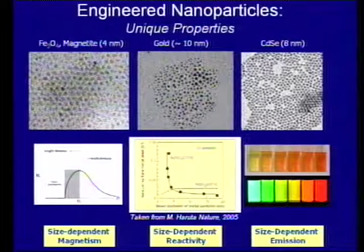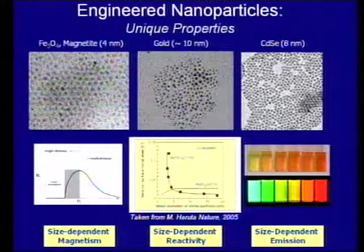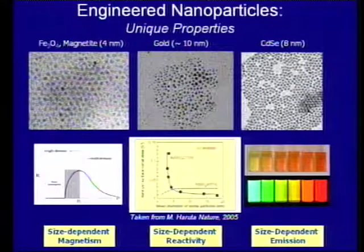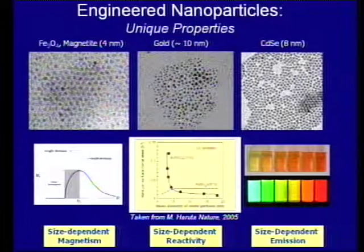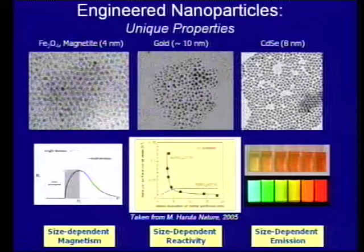They're different from a magnetic point of view — my lab works a lot with magnetic systems. They're different from a chemical point of view: gold when it's very small is incredibly reactive, it can do oxidative chemistry you're not going to have on your wedding ring. And you can have very, very different colors and optical signatures that are very unique. Those unique properties really span a lot of interesting physics and engineering issues.